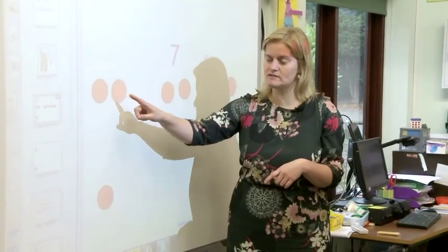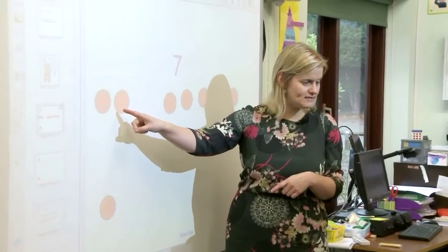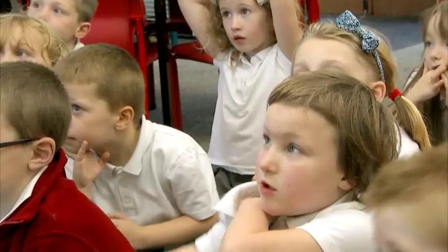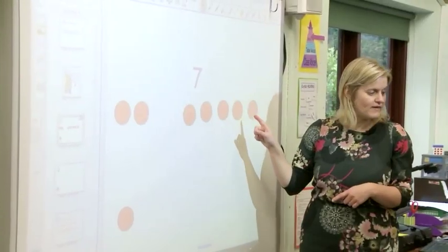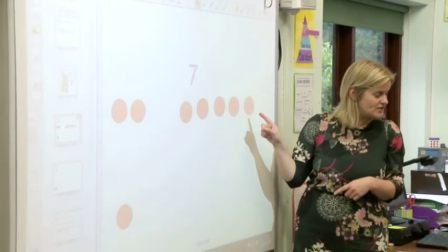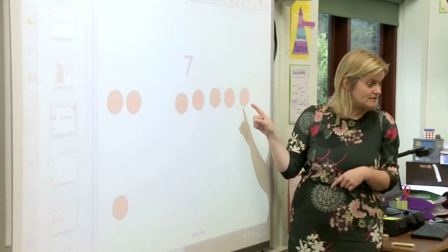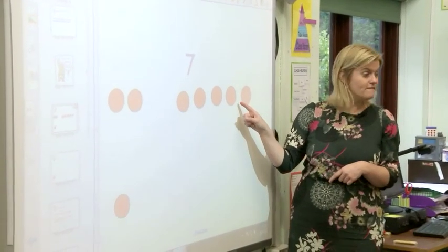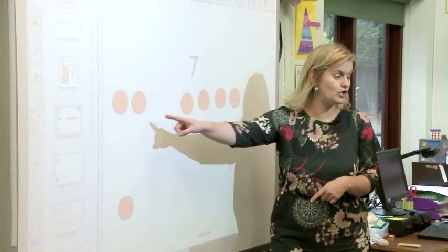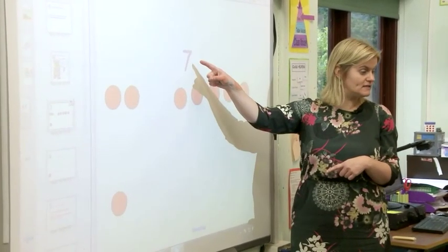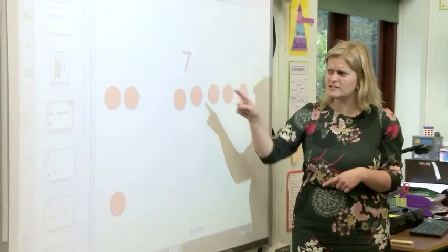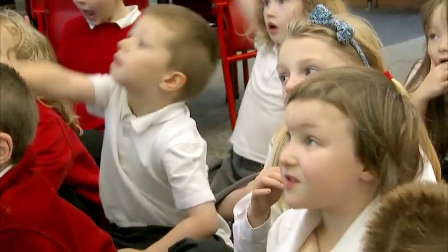If I move 1 across, how many have I got on this side now? 2. How many have I got on this side, Jayden? 5. So 2 and 5 equals 7. How else can I partition it then?